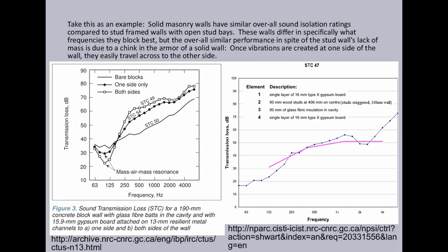Take this as an example. Solid masonry walls have similar overall sound isolation ratings compared to stud-framed walls with open stud bays. These walls differ in specifically what frequencies they block best, but the overall similar performance in spite of the stud wall's lack of mass is due to a chink in the armor of a solid wall. These vibrations are created at one side of the wall. They easily travel across to the other side.